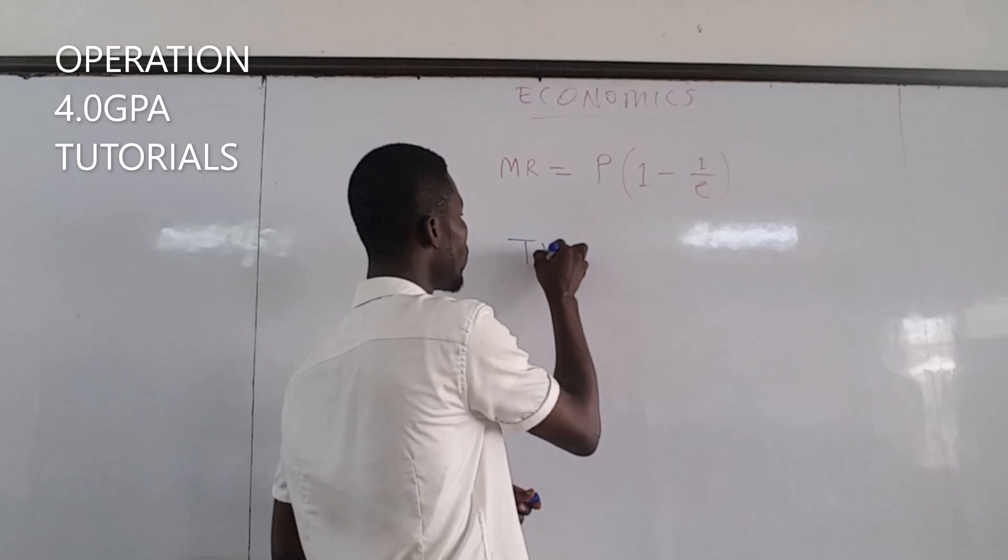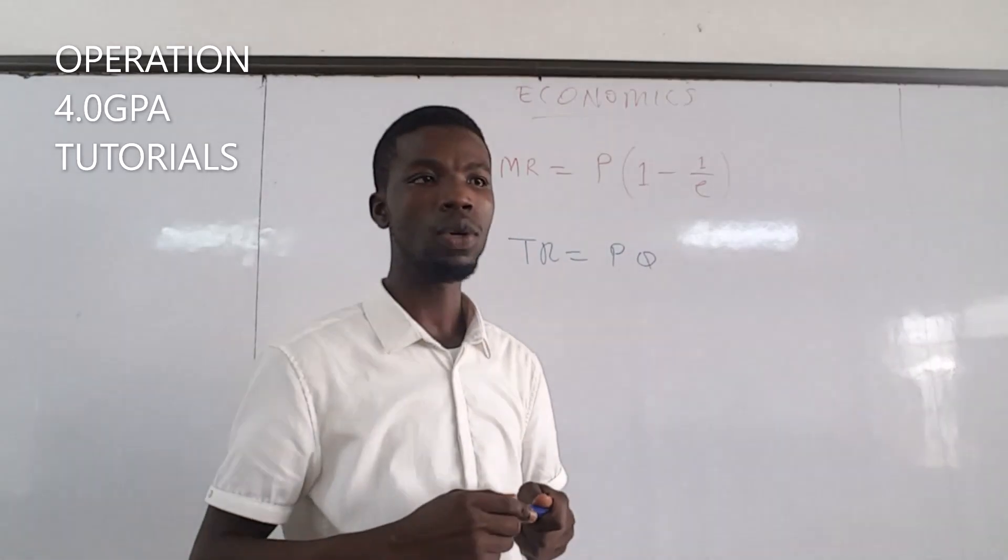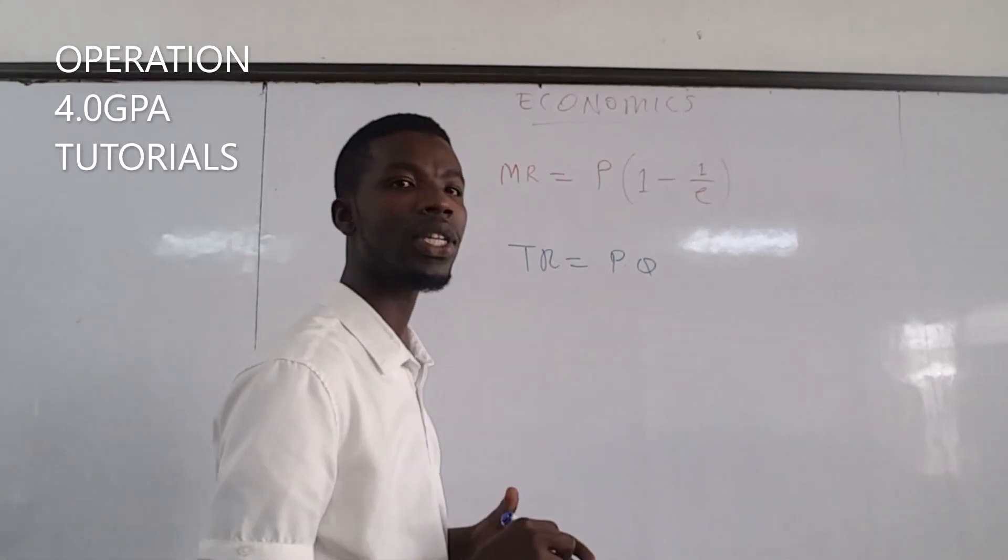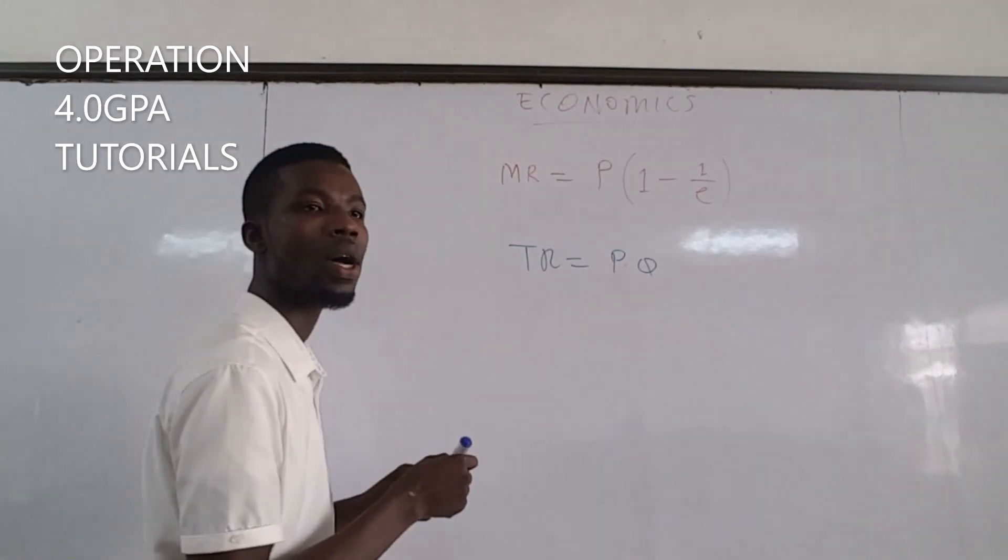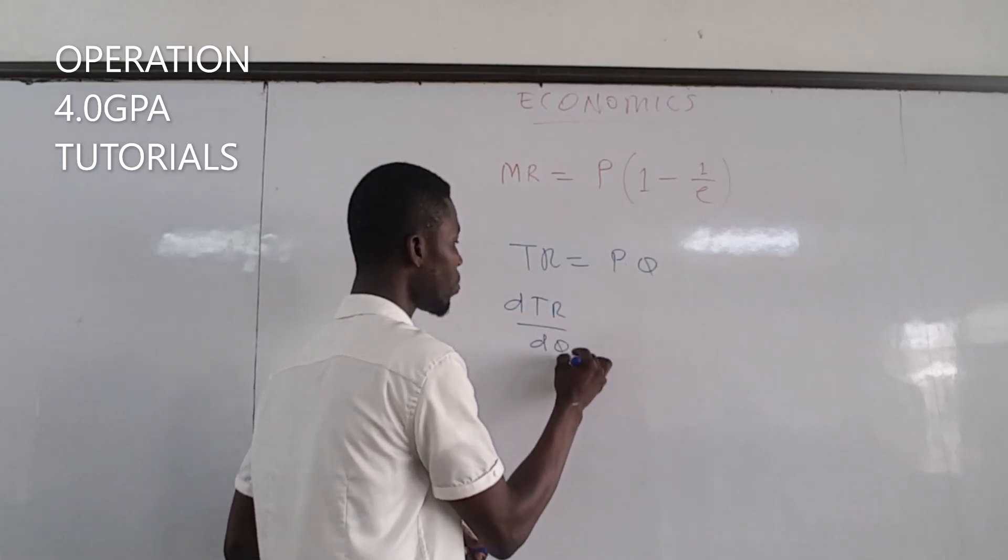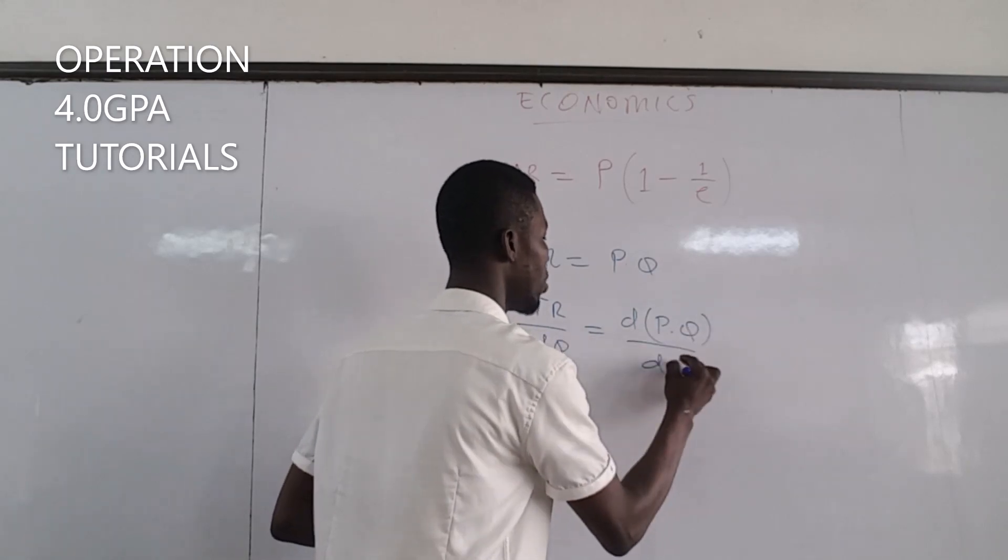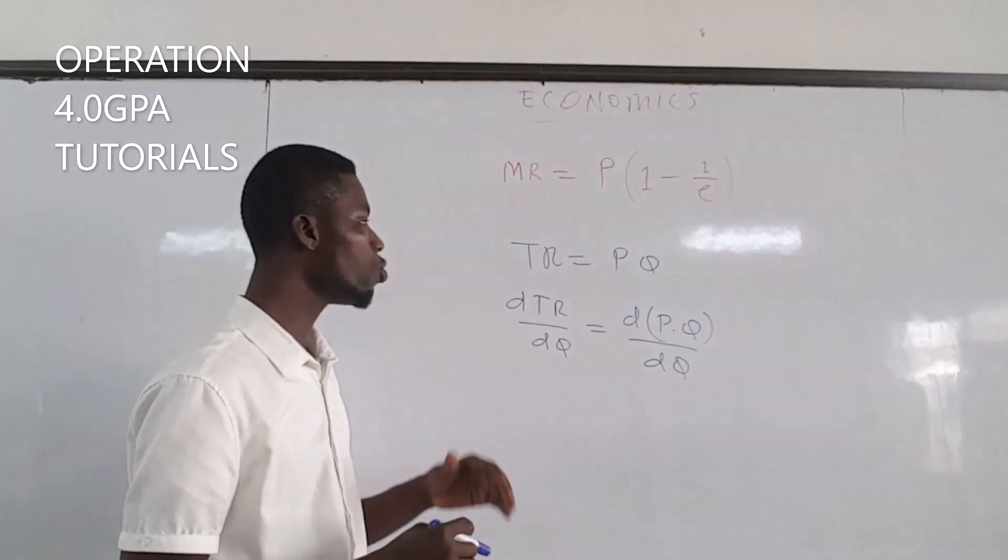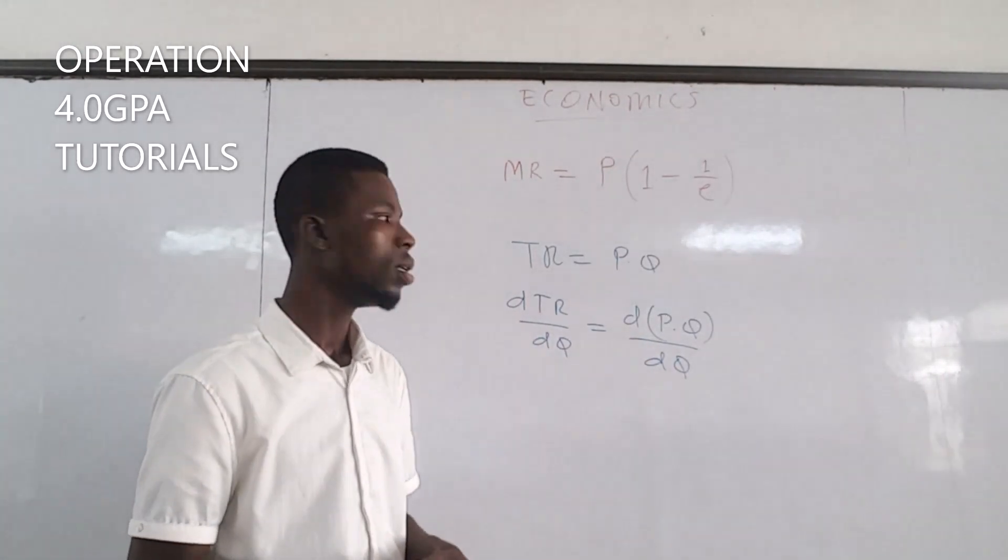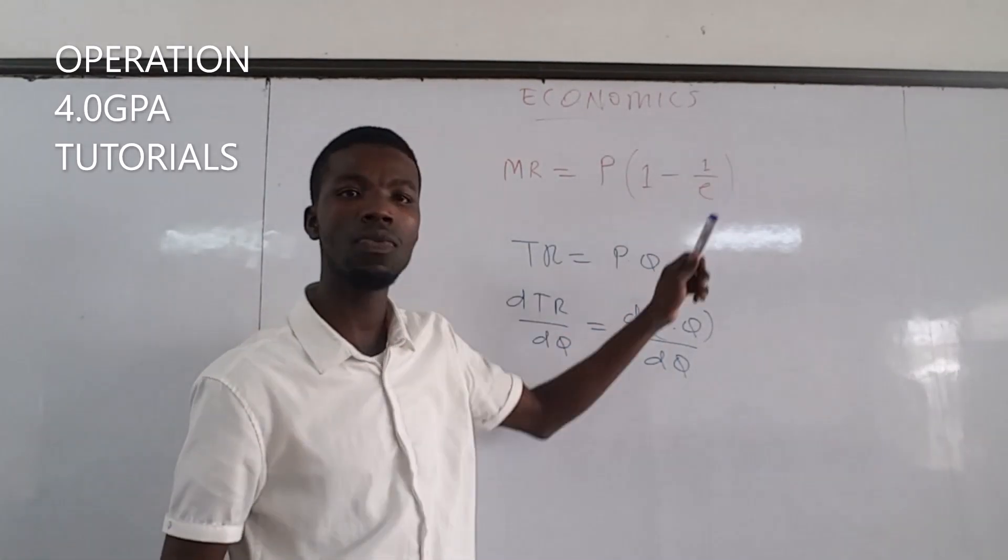As we all know, total revenue is the product of the price of the good and the quantity demanded. And we know that to get marginal revenue, we have to differentiate our total revenue with respect to the quantity. We're going to use total differentiation. We're going to differentiate the price times the quantity to get this relationship P times 1 minus 1 over the elasticity.